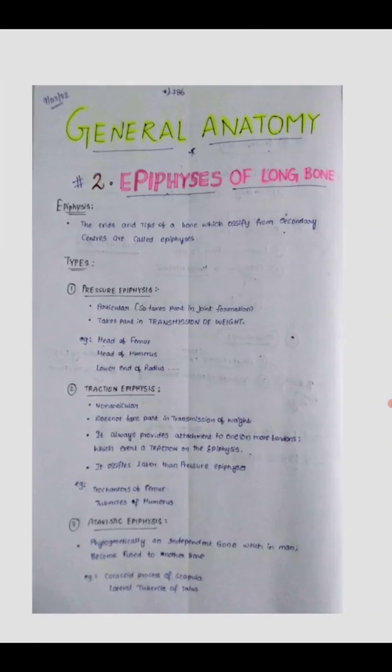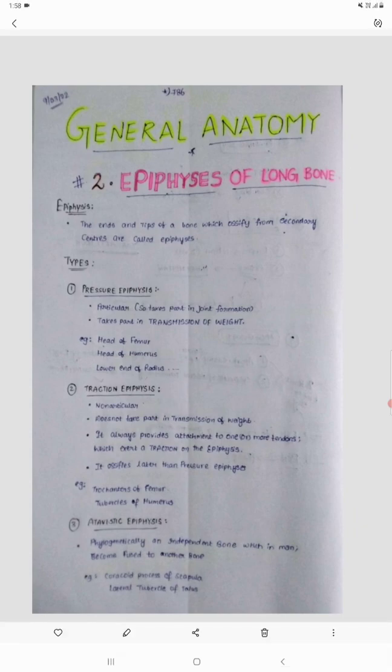Coming to the second type of epiphyses — traction epiphyses. Traction means the action of pulling over a surface. The traction epiphyses is non-articular and does not take part in the transmission of weight. It always provides attachment to one or more tendons which exert a traction on the epiphyses, so traction will be exerted on it and that is why it is called traction epiphyses.